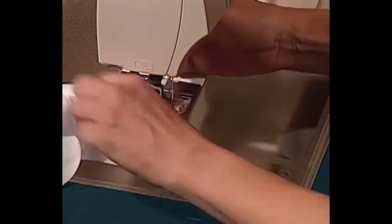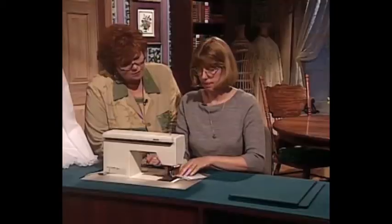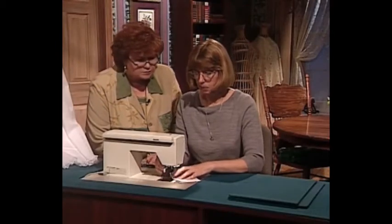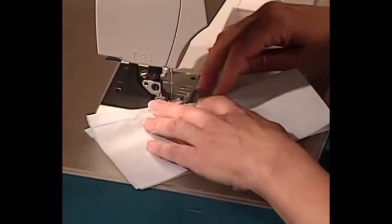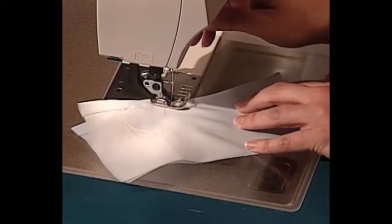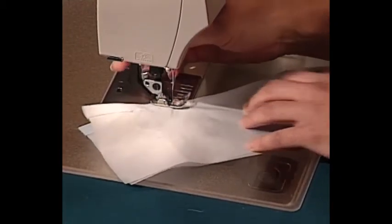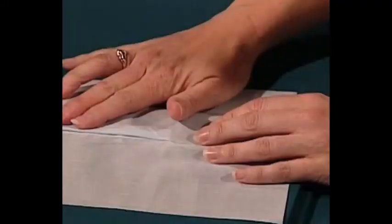The next step then is to press the seam allowance toward the placket and then press under a quarter of an inch on the raw edge of the placket. Then I'm going to fold this over. This is the right side of your garment. I'll fold over that folded edge so that it just covers the stitching line. And I'll again stitch this by machine. I stitch by machine whenever I can. As long as I just cover my stitching, the previous stitching will be hidden. I use an inch and a half for most things. Sometimes for baby garments I'll use an inch and a quarter so that the placket's a little bit narrower.